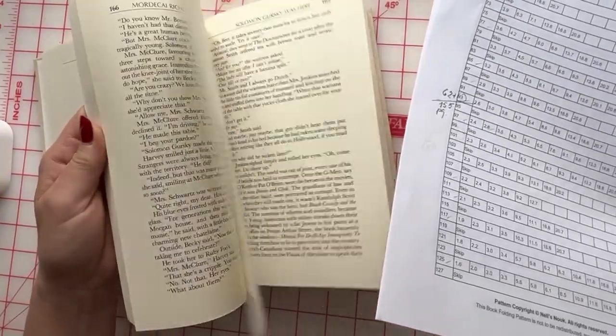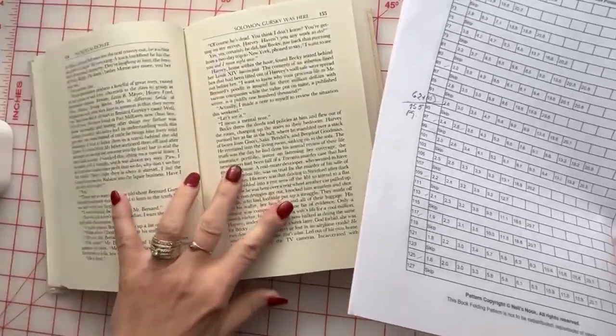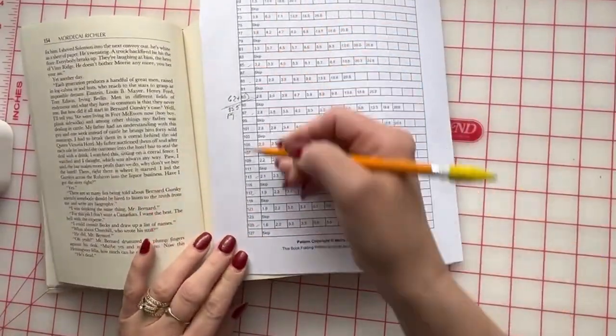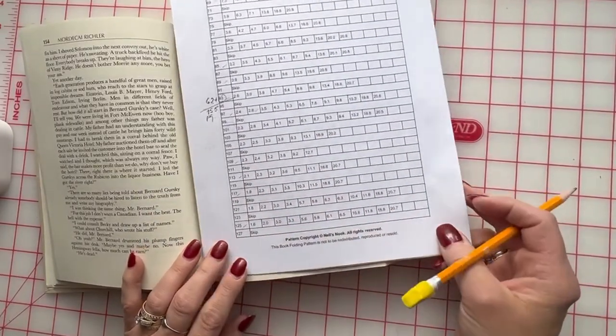So this way when you make a mistake, you cut too much, you cut not enough, sometimes you miss the cut, you can always find the mistake and find out what the measurement is supposed to be on the page.